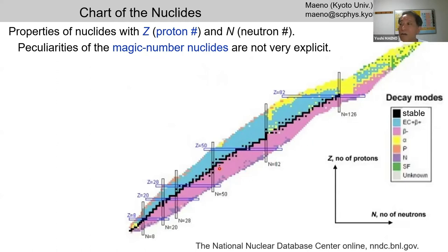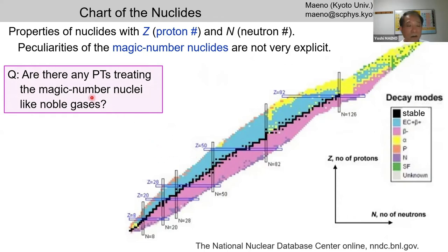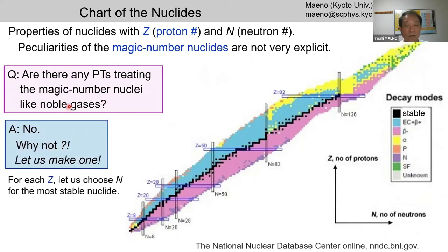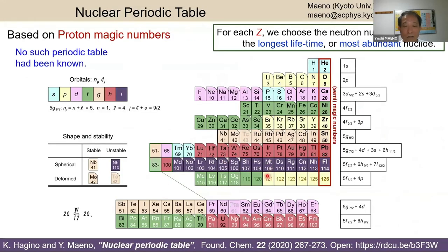Specialists have discussed similarities between nuclear magic numbers and atomic noble gas numbers, but has anyone made a periodic table treating magic-number nuclei like noble gases? The answer is no — and so we made one, published by Hagino and Maeno in Foundations of Chemistry last year. This is the nuclear periodic table: like the long form atomic table, but instead of helium, neon, argon, you have helium, oxygen, calcium, and so on — the proton magic number nuclei. Different colors represent different nuclear proton orbitals.